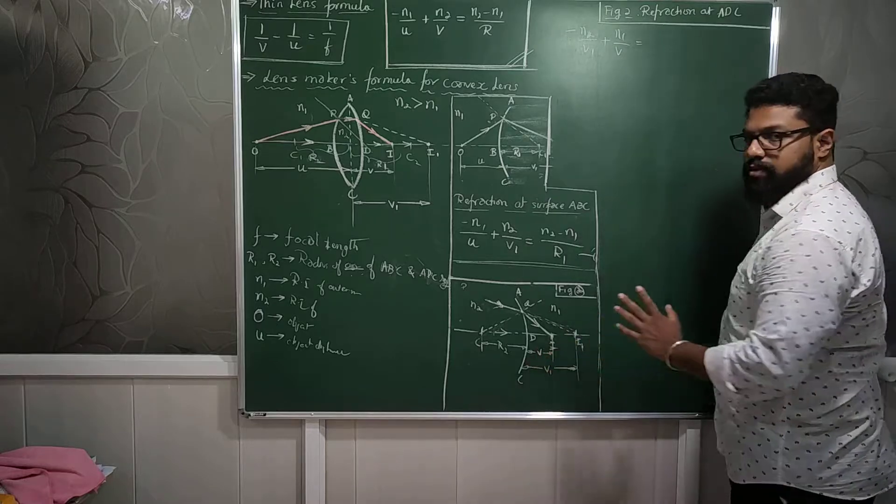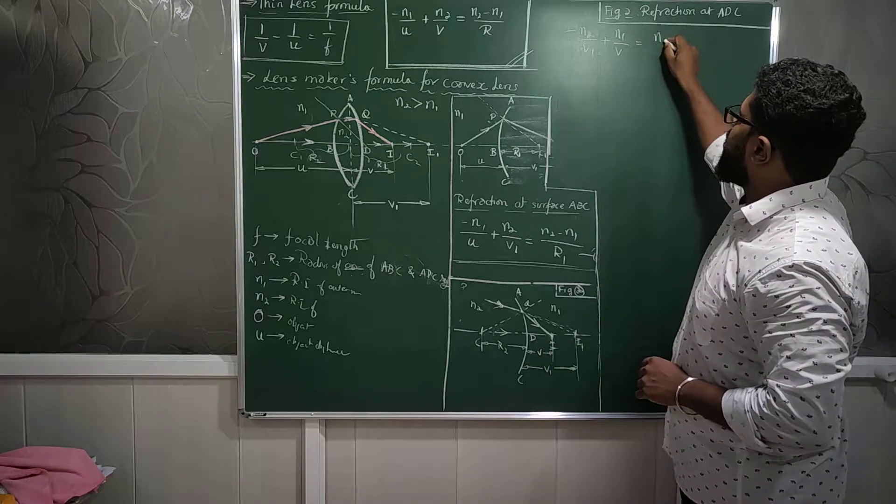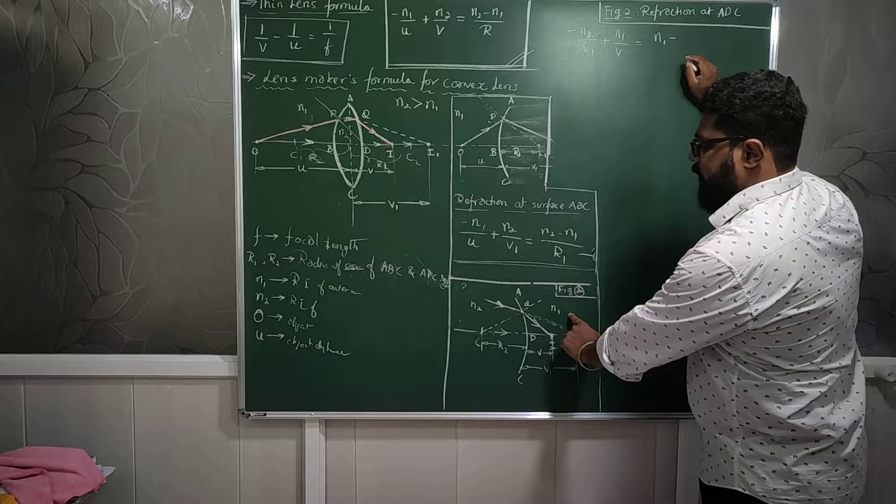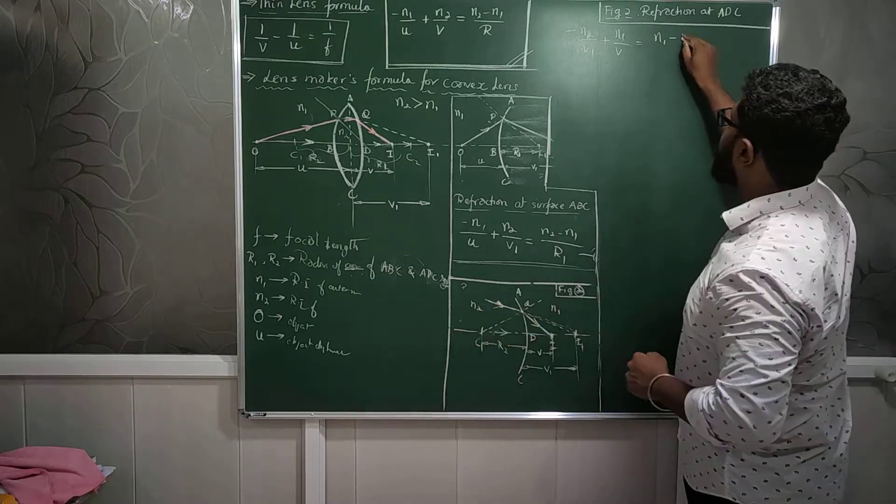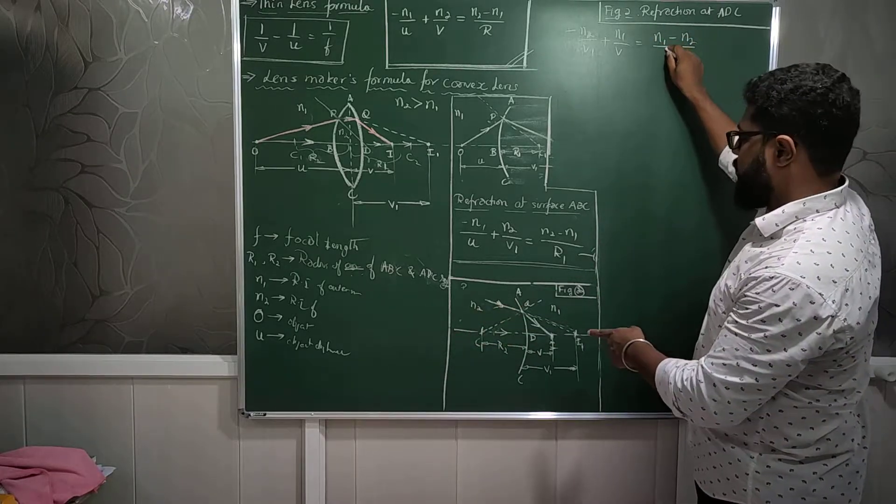N1 is equal to N1 minus N2, the second refractive index minus the first refractive index divided by R.